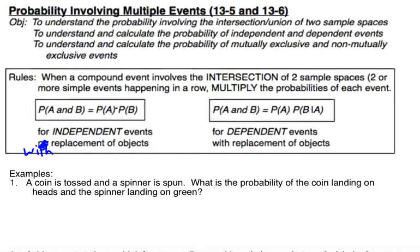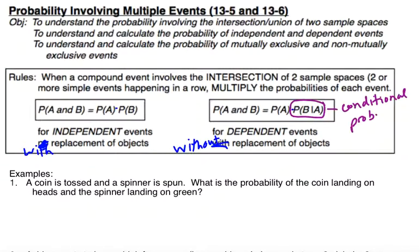Now if we have dependent events, we're again going to multiply, but this time it would be without replacement — please fix my typo so you're not confused. Without replacement, you draw a marble out and you now have one less marble in the bag, and these would be dependent. Because now my probability of drawing a second marble of a certain color is affected by the fact that I have one less marble. That's what we're going to use here — this notation represents a conditional probability, the probability that event B is happening given that event A already happened.